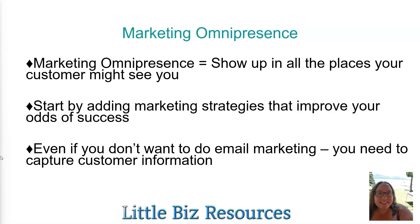Marketing omnipresence is when you show up in all the places your customer might see you in marketing channels. So if your customers are on Facebook and Pinterest and they obviously open emails, you would be on all of those channels. You would start by adding marketing strategies that improve your odds of success — don't jump and do all of the marketing channels at once, but add different elements that are going to improve your chances of making money and increasing your customer base. That is emails — you need to capture emails.